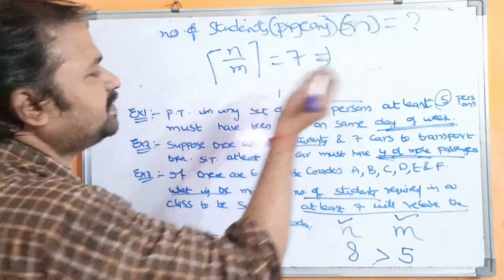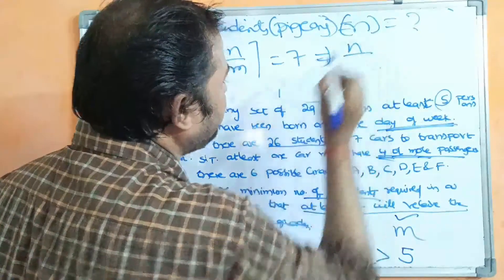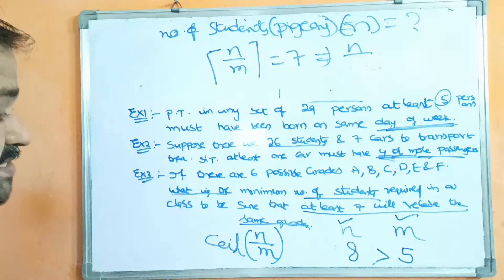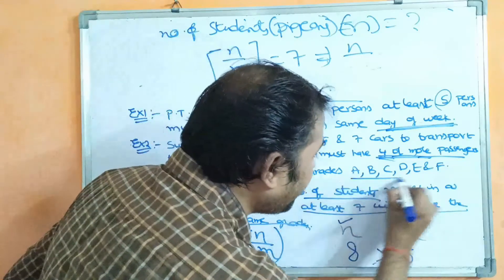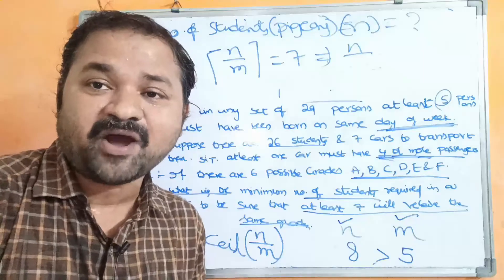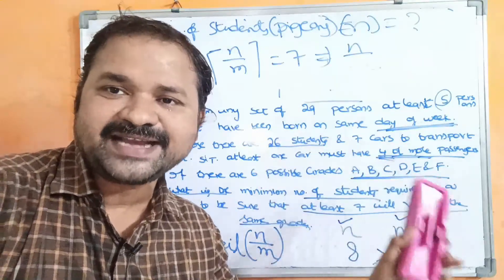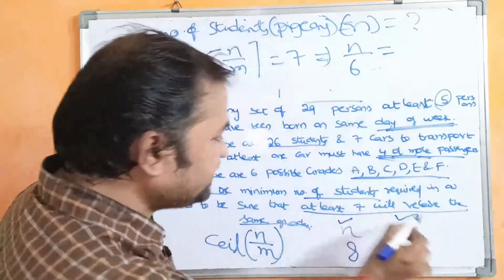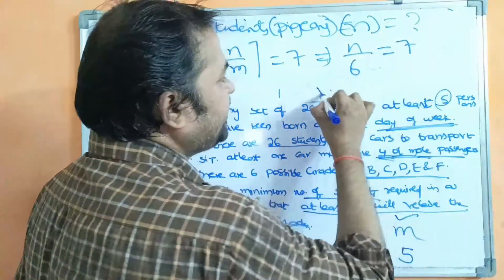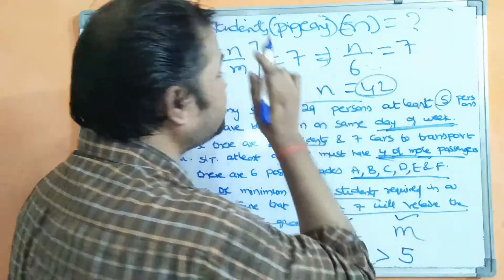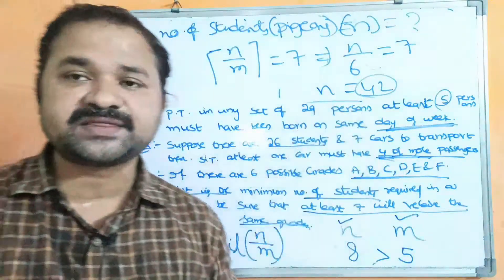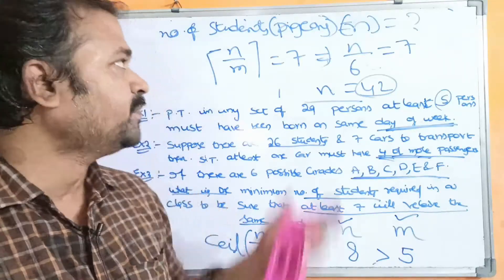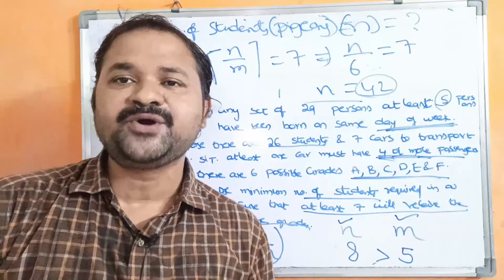n value is not given — we have to calculate it. m is the number of pigeonholes, which is the number of grades — 6 grades are given (A, B, C, D, E, F), so m equals 6. So n divided by 6 equals 7, which gives n equals 42. The number of students (pigeons) is 42. In this way, we can solve any problem based on the Pigeonhole Principle.